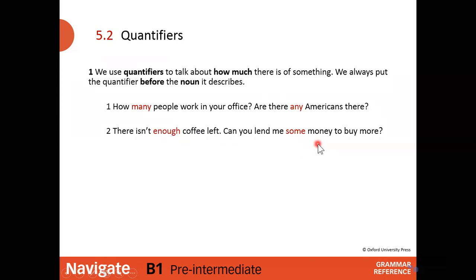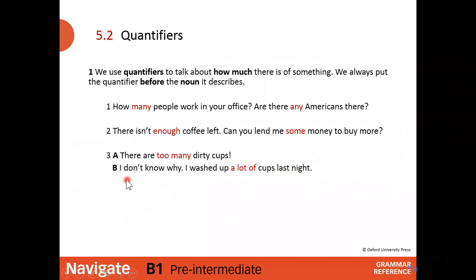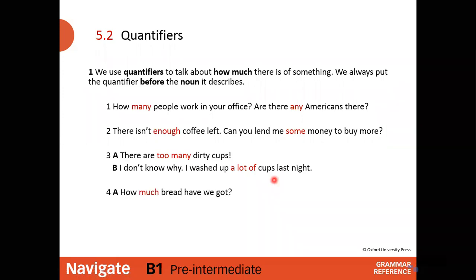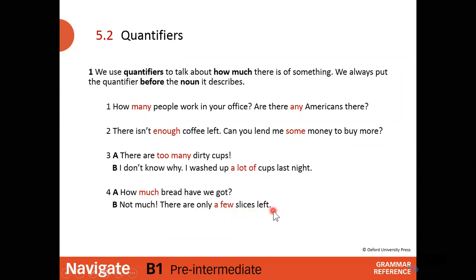'Can you lend me some money to buy more?' — 'some' is the quantifier and 'money' is the noun. 'There are too many dirty cups!' — 'too many' is the quantifier and 'cups' is the noun. 'I washed a lot of cups last night' — 'a lot of' is the quantifier. 'How much bread have we got?' — 'not much.' 'There are only a few slices left' — 'a few' plus 'slices,' the noun.